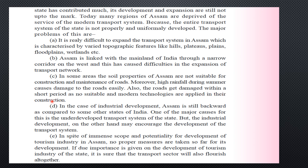Roads get damaged within a short period because no suitable and modern technologies are applied in their construction. To solve this problem, technology specifically suited to Assam's soil conditions is needed — not just the same technology applied in other cities across India — because Assam's problem is specific and requires a specific solution. In terms of industrial development, Assam is still backward compared to some other states, contributing to the underdeveloped transport system.